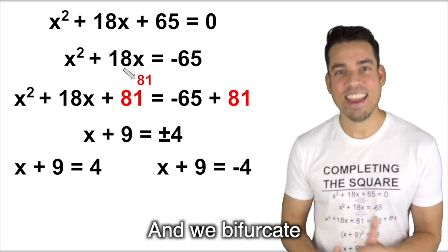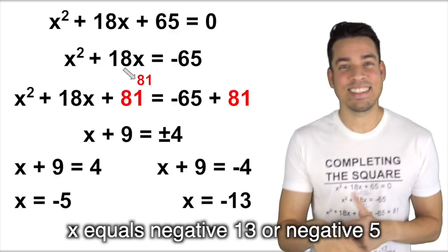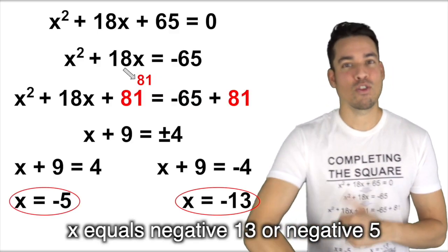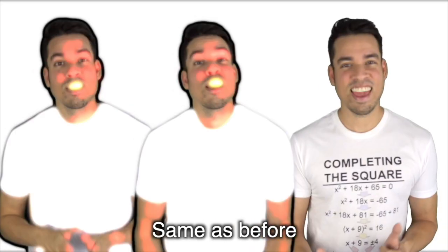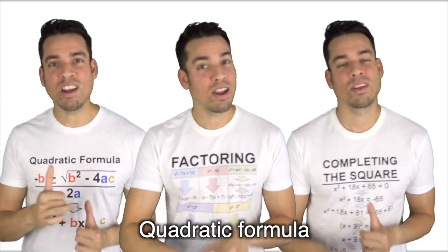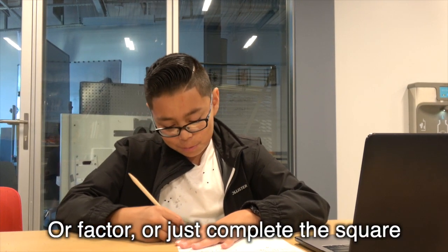Subtract 9 from both sides: X equals negative 13 and negative 5, same as before.